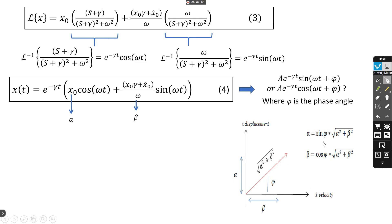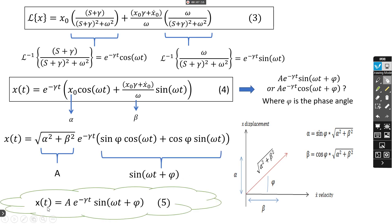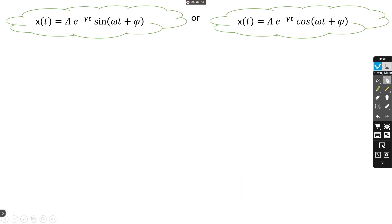The angle φ is between displacement and the initial conditions. From this representation we can deduce sine φ and cosine φ, and we replace these into expression 4. We get the final solution for displacement x, where A is square root of α² + β².